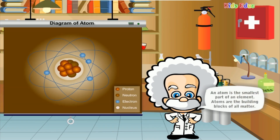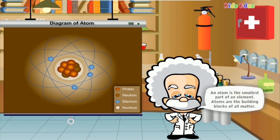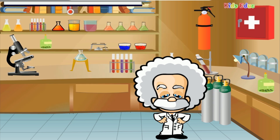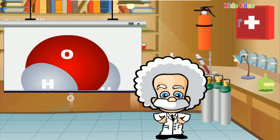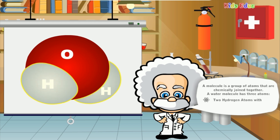An atom is the smallest part of an element. A molecule is a group of atoms that are chemically joined together. A water molecule has three atoms: two hydrogen atoms with one oxygen atom.